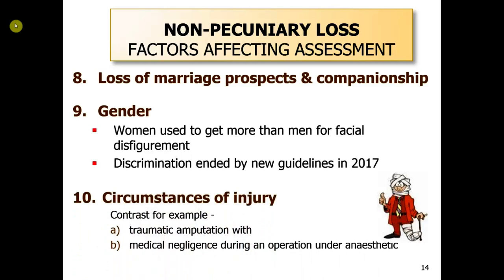The circumstances of injury will make a difference. If you lose a leg as a result of a traumatic amputation — say you're in a road accident and there's an emergency amputation — as opposed to going into hospital and having the wrong leg taken off during an operation, that still happens. Under anaesthetic it's not as traumatic as the road accident, so the circumstances differ. There are ten factors which affect the assessment, and they're not discussed in the textbooks at all.